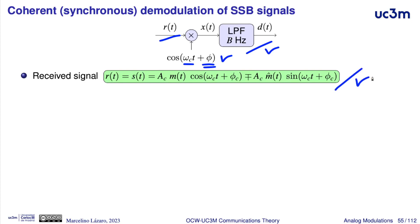We will assume that the received signal is just the modulated signal — a single sideband modulated signal. With the negative sign we have the upper sideband, and with the positive sign we have the lower sideband.